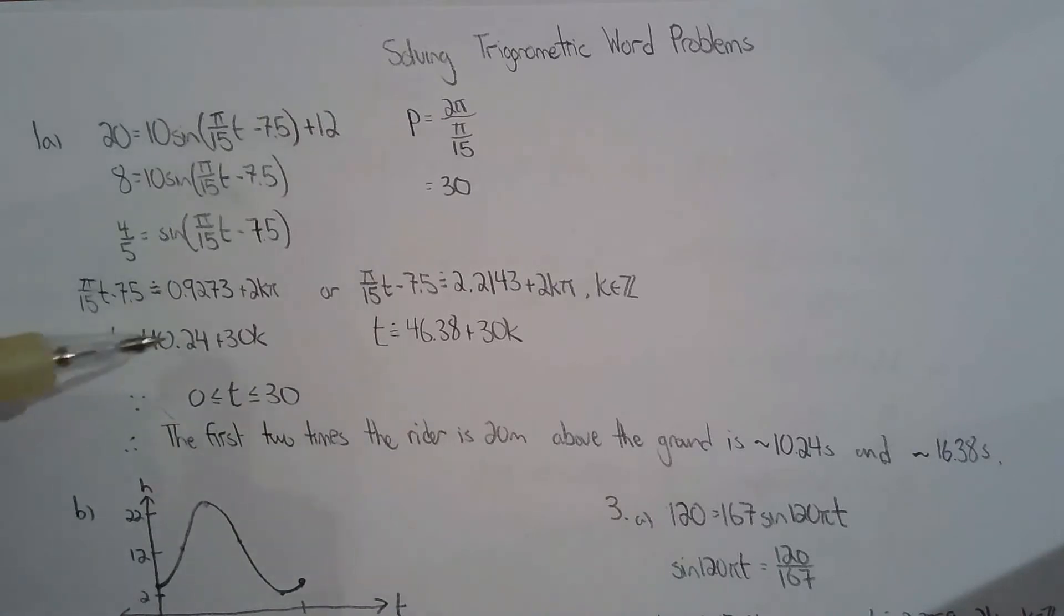Now why do we get this 40.24 and why do we get the 46.38? What you can do is solve for the horizontal translation and you'll notice that the translation is greater than the period. That's why you solve for solutions that are not within the first cycle.